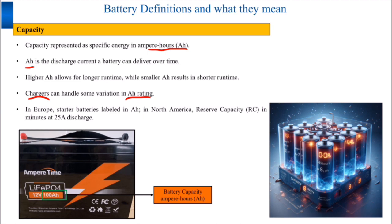In Europe, starter batteries are labeled with Ah, indicating the ampere-hour capacity. In North America, it is known as reserve capacity, or RC, which indicates the discharge time in minutes at a 25-amp discharge rate. It is important to understand these differences when dealing with batteries.